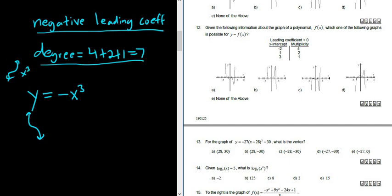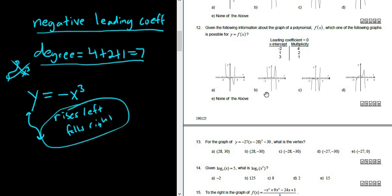In this case it's negative though. And then so you say, okay, this rises left and falls right. So rises left and falls right. So now you just look at the graph that has these characteristics. So looks like it's going to be B. So the answer to this question should be B.